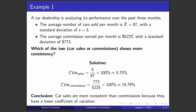Which of the two — car sales or commissions — shows more consistency? The first part of the data covers cars sold: the mean and standard deviation of cars sold. The second part covers commissions: the average commission per month and the standard deviation of commission per month. To compare these two data sets, which have different units — car sold is a count, commission is measured in dollars — you cannot rely on standard deviation alone. You need a more robust measure of variation.